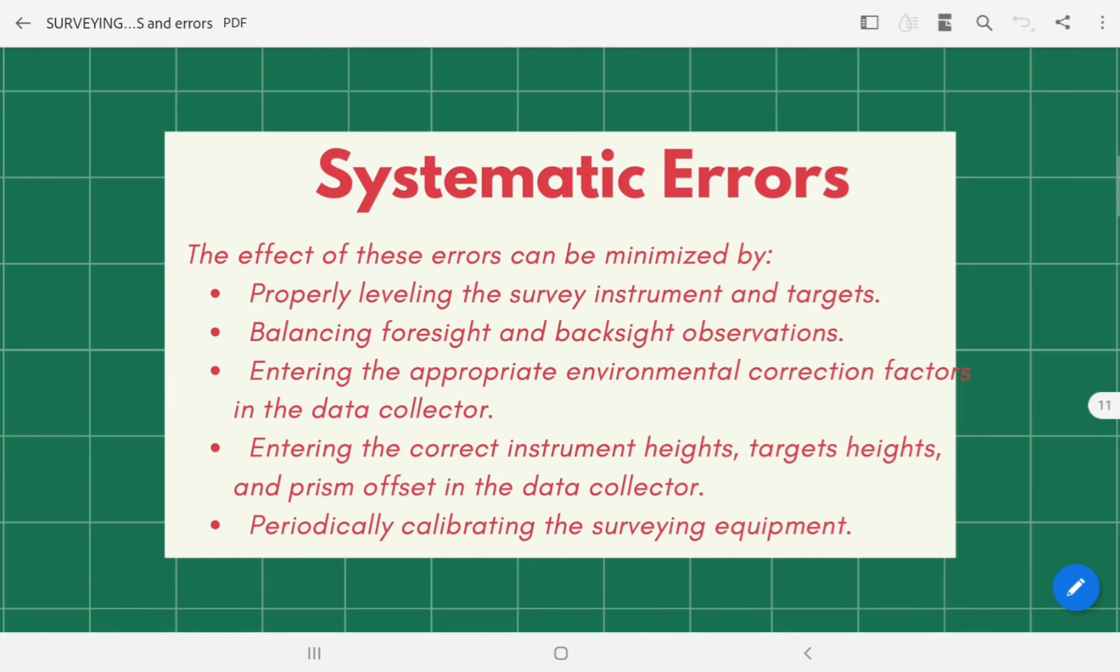The effect of these errors can be minimized by properly leveling the instrument and targets, balancing foresight and backside observations, entering the appropriate environmental correction factors in the data collector, entering the correct instrument heights, target heights, and prism offset in the data collector, and periodically calibrating the surveying equipment. If appropriate corrections are not made, these errors can accumulate and cause significant discrepancies between measured values. By keeping equipment in proper working order and following established surveying procedures, many of the systematic errors can be eliminated.